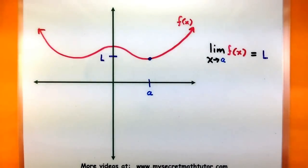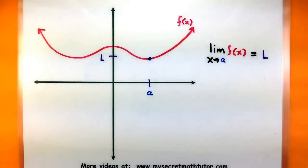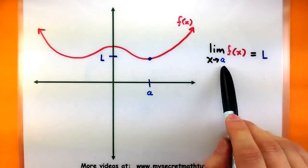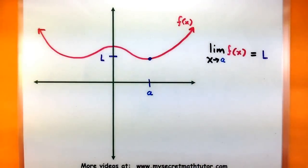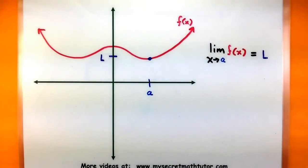So essentially the limit is made up of three different parts. One, you're taking the limit of some function, you're looking at x values as they approach some value A, and you're looking at the y values of the function to see if they approach a value, and we call that L or the limit.